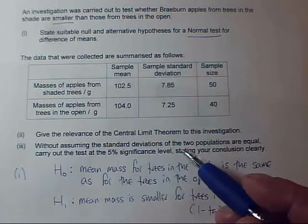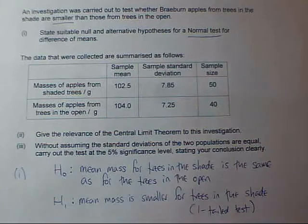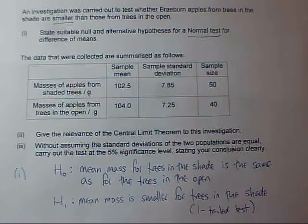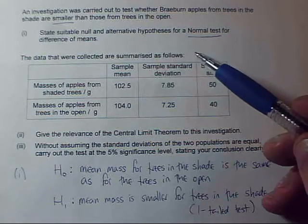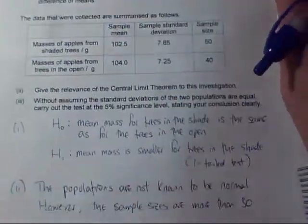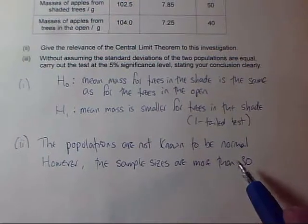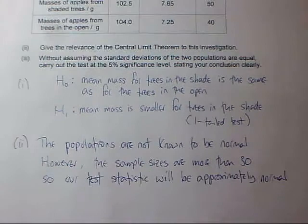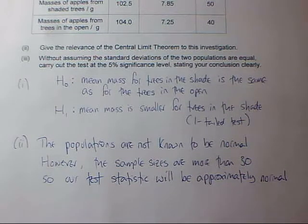The reason why the central limit theorem applies — we have to look at the sample sizes. These have to be at least 30 for the central limit theorem to actually apply, and luckily they are. I have to say I can use the central limit theorem because the sample sizes are big enough, and I have to say why I need it — because I don't know that the original populations were normal, but I want to use a normal distribution for my test statistic. The populations are not known to be normal; however, the sample sizes are more than 30, so our test statistic will be approximately normal and we can use a normal distribution for our critical values.